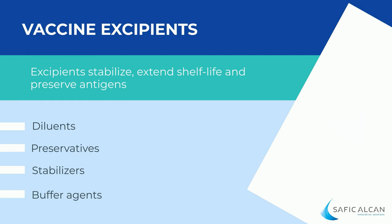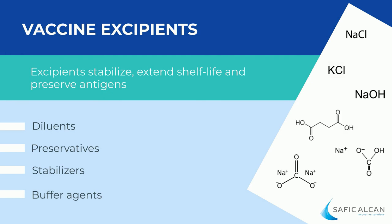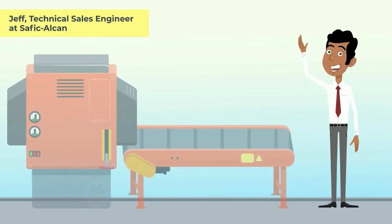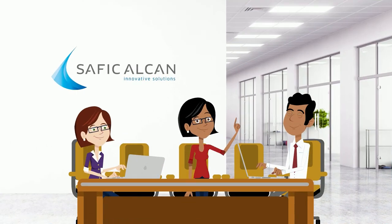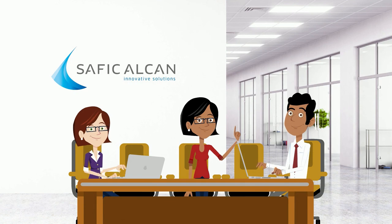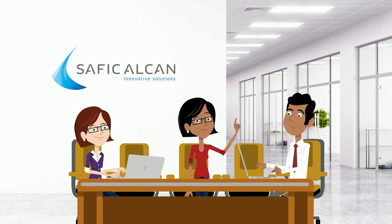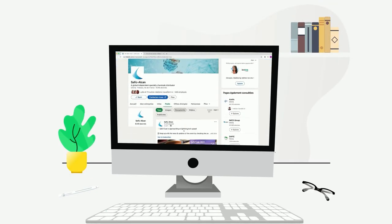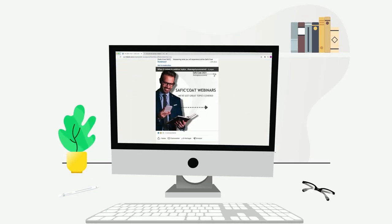Popular buffers include sodium chloride, potassium chloride, sodium hydroxide, succinic acid, sodium bicarbonate, and sodium carbonate. Need any of these ingredients? Don't hesitate — get in touch with our sales representatives who will be able to advise you on the formulation of your future vaccine. Thanks for your attention. Let's keep in touch — follow us on LinkedIn for monthly content.